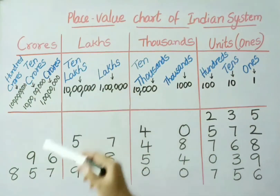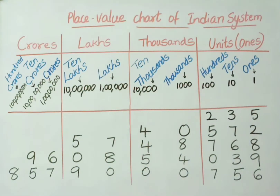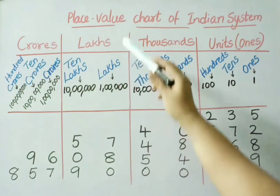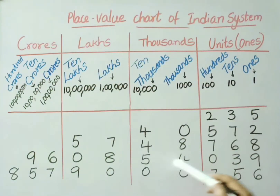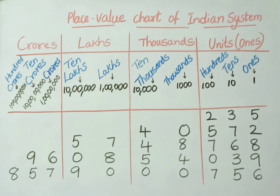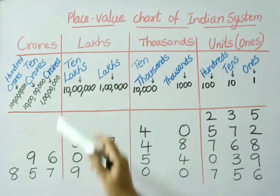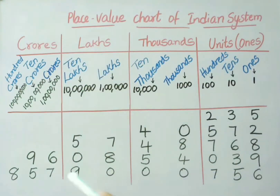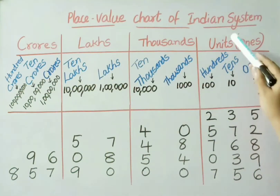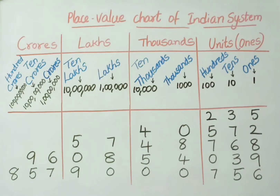Under crores period, ninety-six is there. So read: ninety-six crores, eight lakhs, fifty-four thousand, thirty-nine. See the next one: eight hundred fifty-seven crores, ninety lakhs, seven hundred fifty-six.